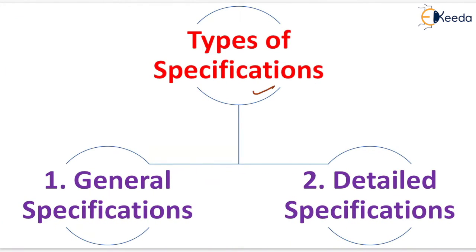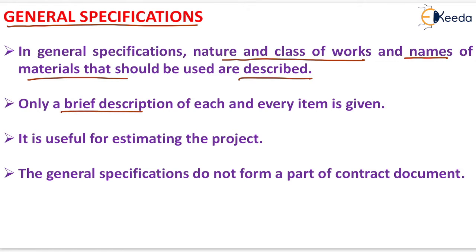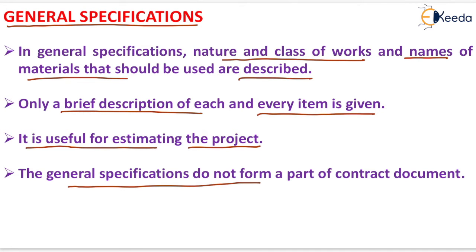Generally, the type of specification is of two types: general specification and detailed specification. In general specification, the nature and class of work and names of materials that should be used are described. Only a brief description of each and every item is given. It is useful for estimating the project, and general specification does not form a part of the contract document.